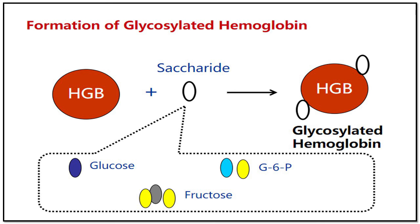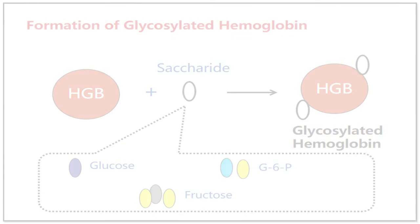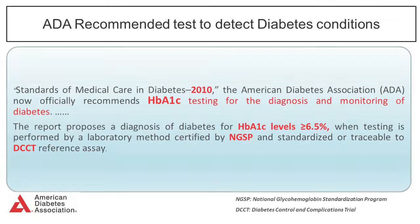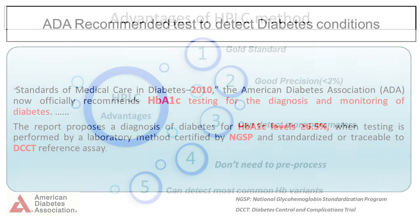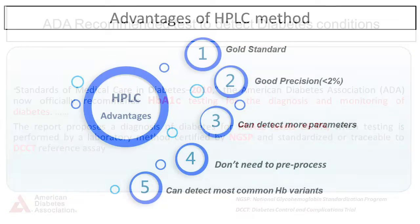Therefore, the glycohemoglobin level is a useful indicator of long-term blood glucose control. The American Diabetes Association now officially recommends HbA1c testing for the diagnosis and monitoring of diabetes.